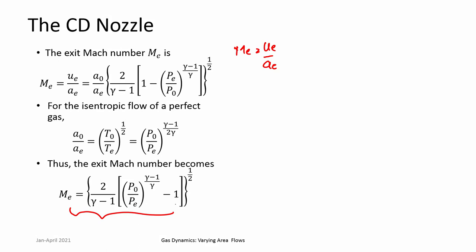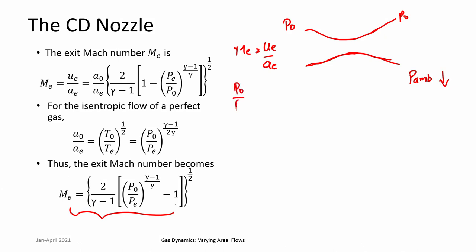If I have a given P₀ and start with a convergent-divergent duct where P₀ is given, initially at the exit P₀/P_e is 1, meaning Mach number is 0 — there is no flow. Now I start reducing the back pressure or ambient pressure. As P_ambient is reduced, P₀/P_e increases, or P_e/P₀ decreases. We look at pressure ratios — they are important. As back pressure decreases, we look at how the CD nozzle behaves.